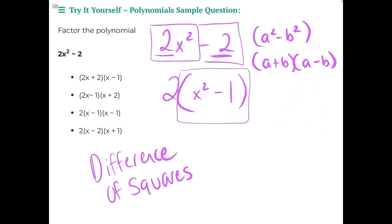So in order to factor this problem here, we need to leave our 2 on the outside of the parentheses, take our a, which is x, a plus b, which is 1, and then multiply it by x minus 1.